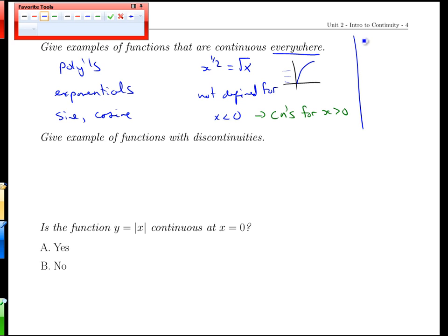What about something like x to the one third? Well, that, in fact, is continuous everywhere. Remember, that's the cube root function. In cube roots, we can take the cube root of negative numbers with no problem. That's our sideways cubic, and it would be continuous everywhere.